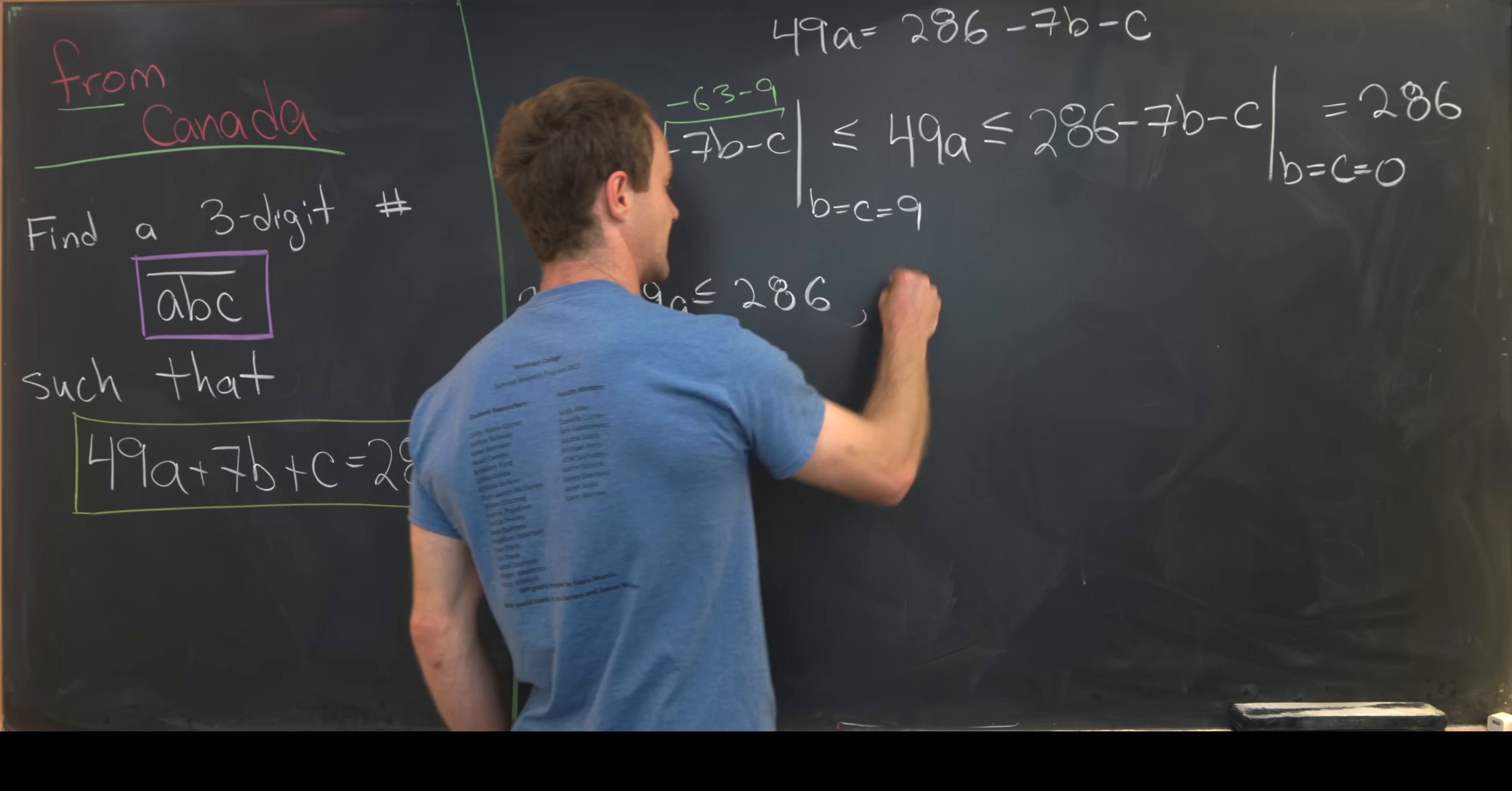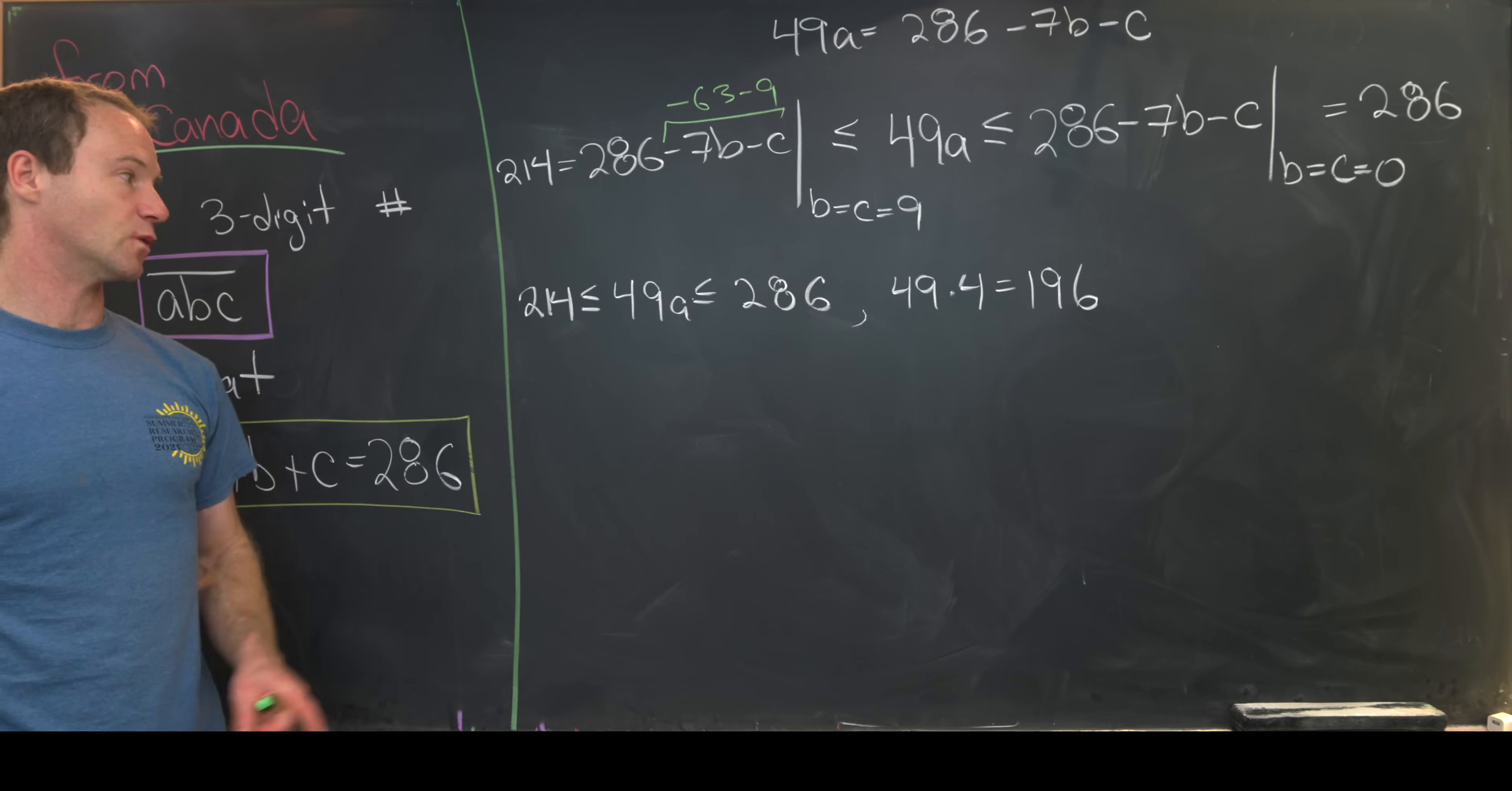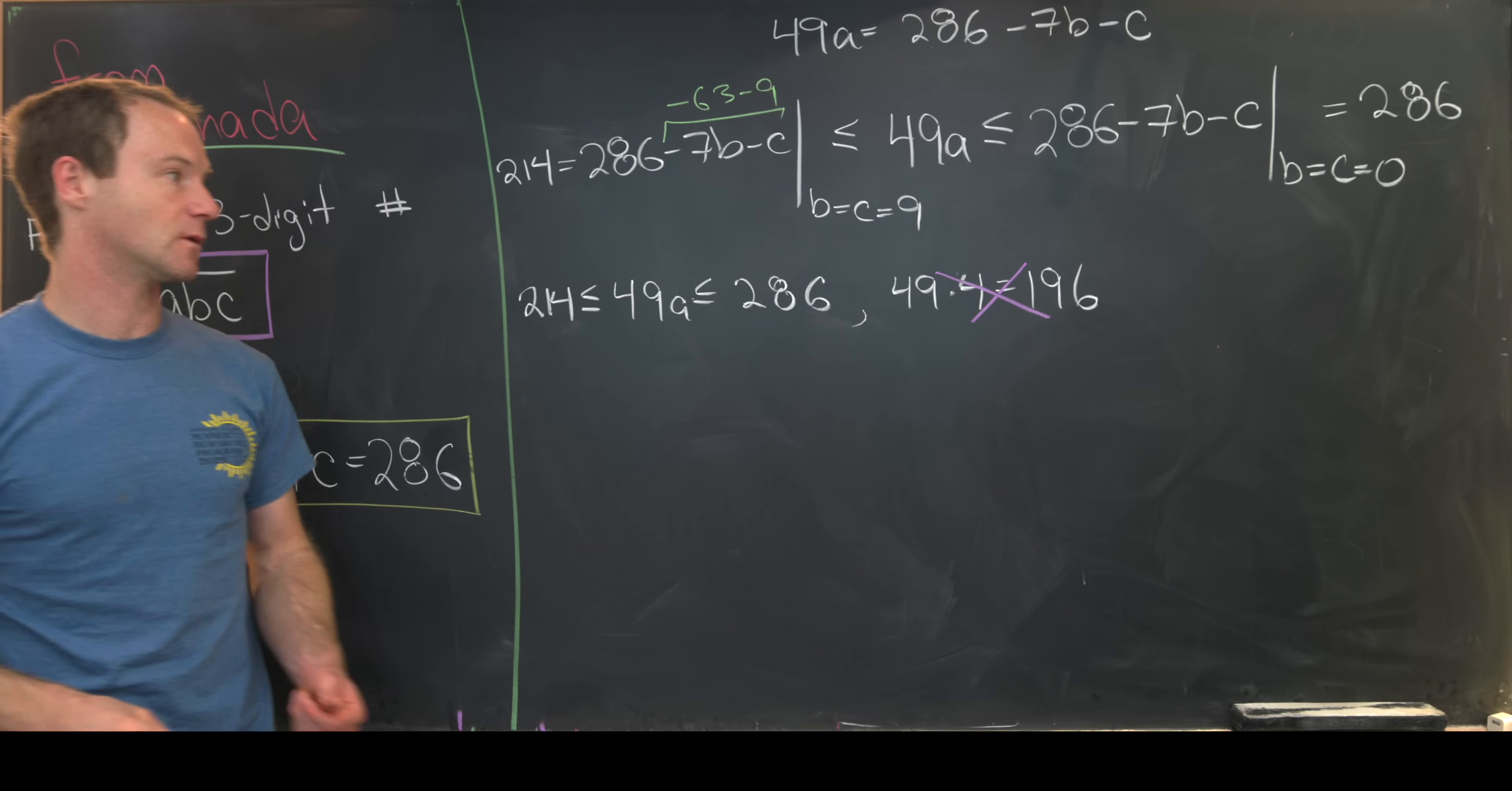Now we can check three things. First off, 49 times 4 is equal to 196. But notice that 196 is less than 214. So this is not possible. In other words, A cannot be equal to 4.